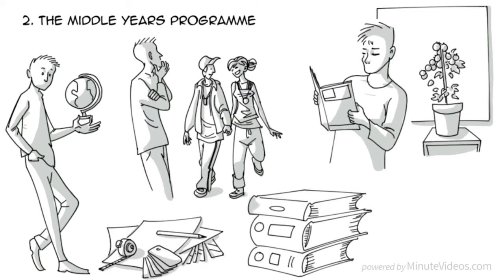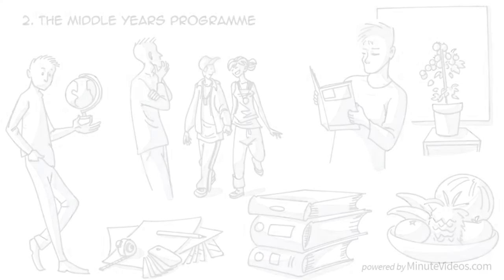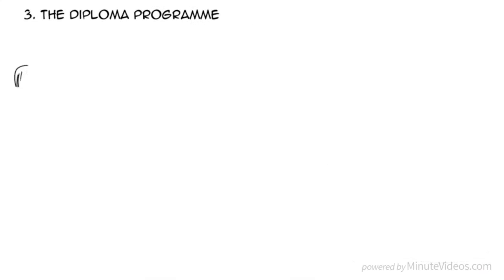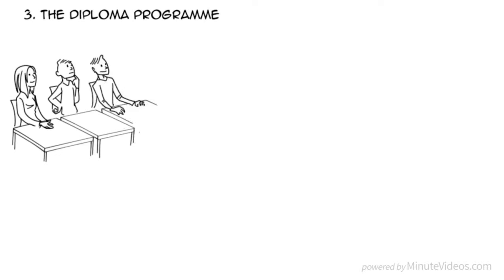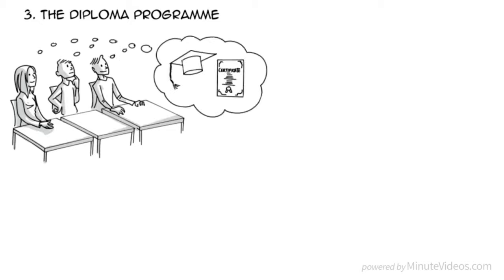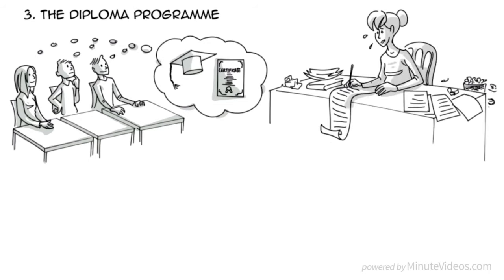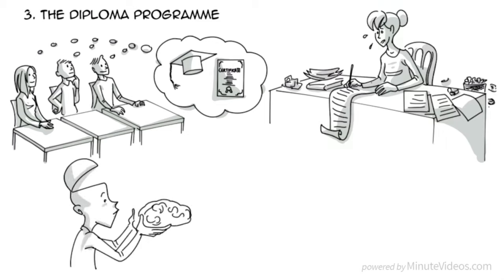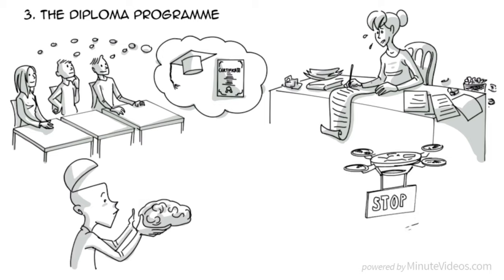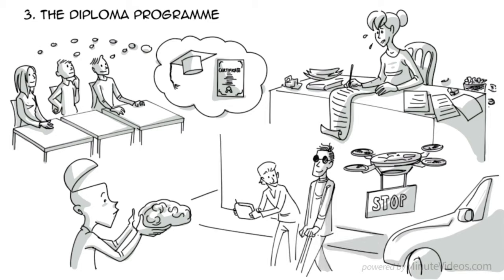Three, the Diploma Program. This is a two-year program for students aged 16 to 19 who seek a certified qualification to enter a university or another higher education institution. In addition to six elective classes, it consists of three core subjects: one, extended essay writing 4,000 words; two, Theory of Knowledge, in which students learn to reflect on the nature of their own knowledge; and three, Creativity, Action, and Service, to learn creative thinking through experience and social work.